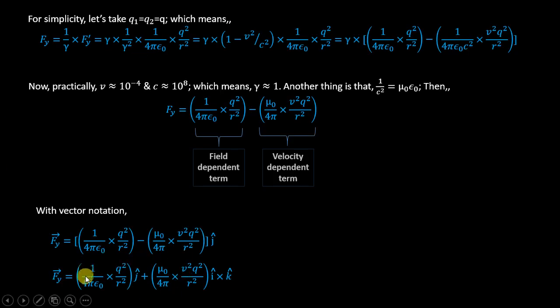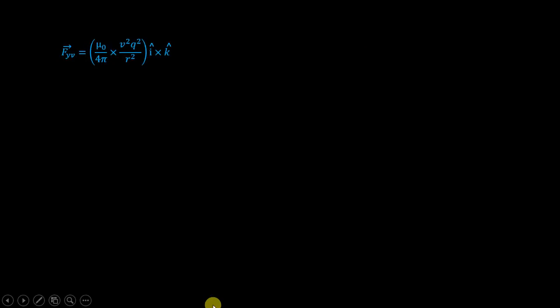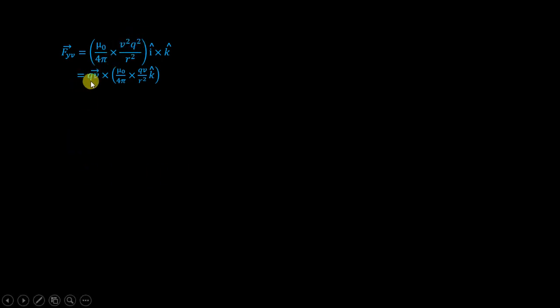Looking at only the velocity-dependent term — since the electrostatic term is straightforward — we get Fy_v = (μ₀/4π)(v²·q²/r²)(î × k̂). Now, taking one q·v outside: q·v·î can be written as the velocity vector v⃗. So we get q·v⃗ crossed with (μ₀/4π)(q·v/r²) k̂. We can also write q·v·î = I·δl, where I is current and δl is the length element in the wire.